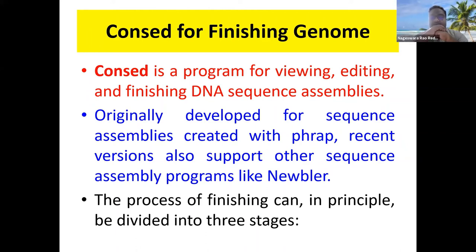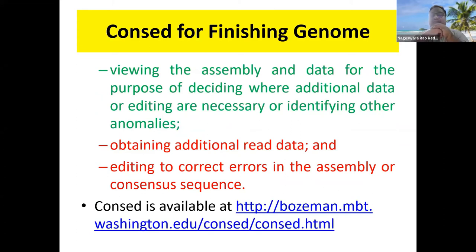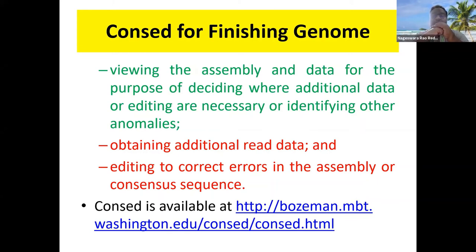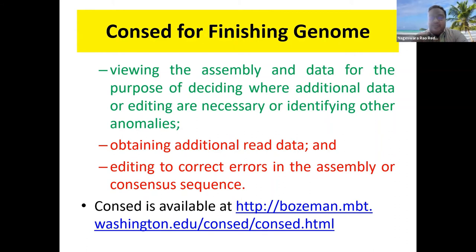The process of finishing can be divided into three stages. First is viewing the assembly data for the purpose of deciding where additional data are required. Wherever there is a problem in the reads identified during contig assembly, that data is examined. If the data is not in proper order or contains errors, that clone will be sequenced again.